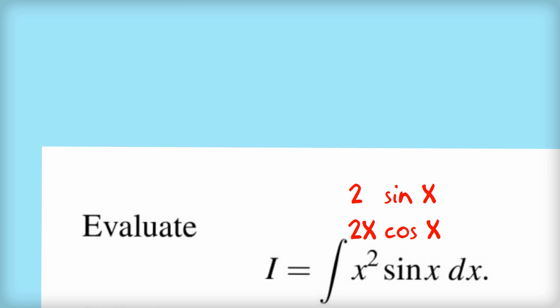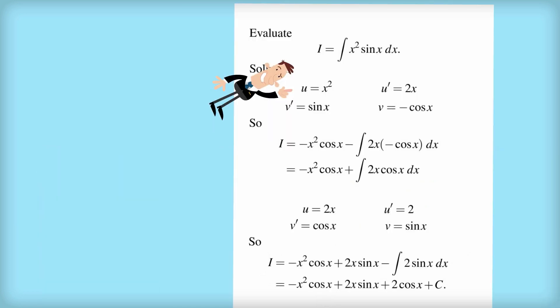So we said that we'd take u equals x squared, which means that the derivative of u, u dash, is equal to 2x. We'll let the derivative of v with respect to x equal sine x, which means that v equals negative cos x.